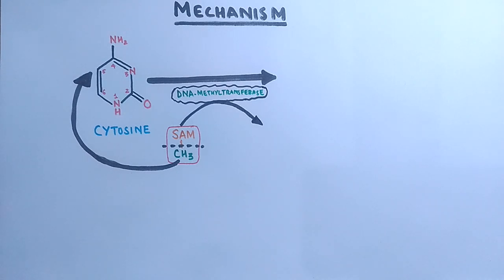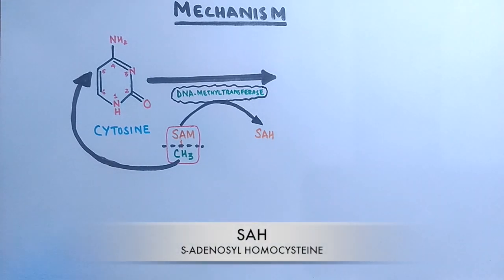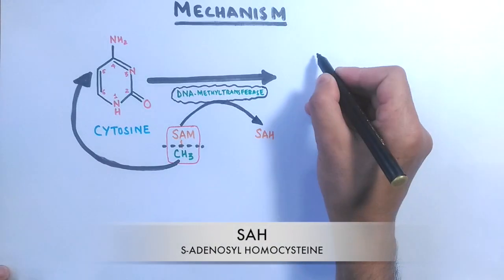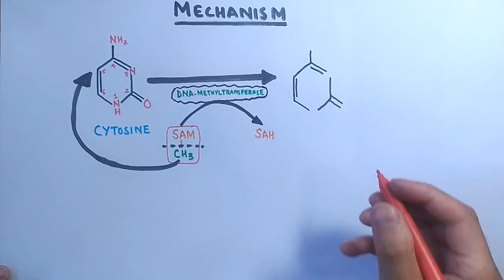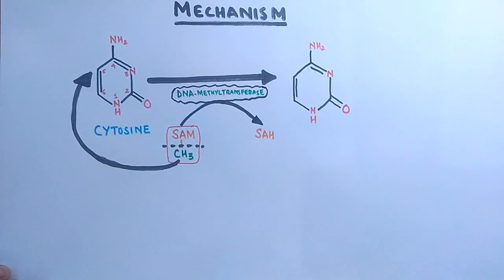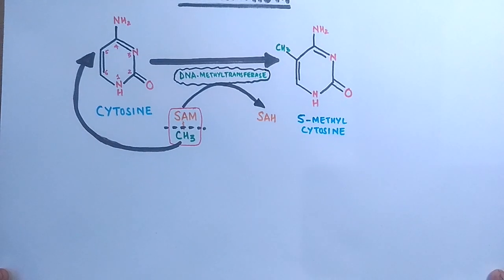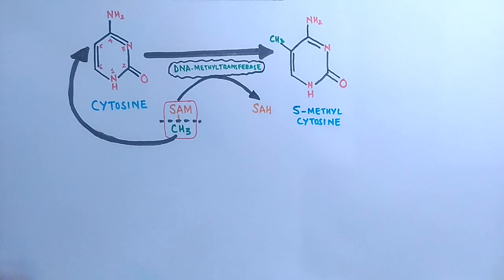In this reaction, the donor molecule of the methyl group — S-adenosyl methionine (SAM) — gets converted into SAH, that is S-adenosyl homocysteine. The result is a cytosine molecule with a methyl group added at the fifth position, as shown in the figure, and this is termed 5-methyl cytosine.